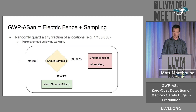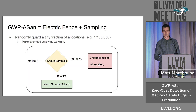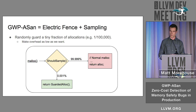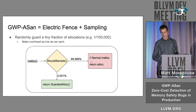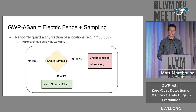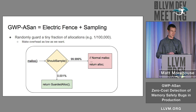GWP-ASAN introduces the idea of sampling to Electric Fence. Instead of guarding every allocation, we guard only a tiny fraction of them and then rely on large numbers and wide deployment to find bugs. As you can see in the diagram, a call to malloc has a quick should-sample check, and 99.999% of the time we just do a normal malloc — only a tiny fraction of the time do we do a guarded one. By tuning this sampling rate, we can get the overhead as low as we want it to be.